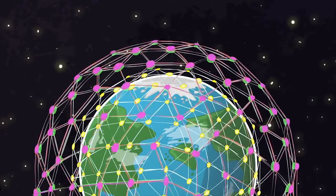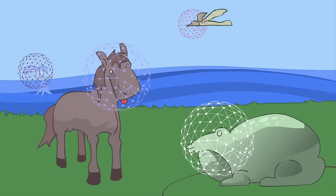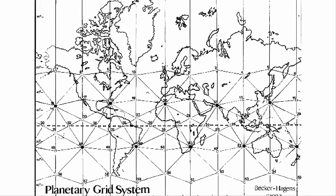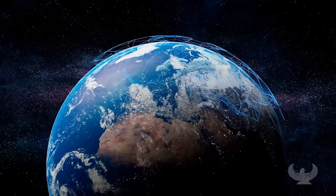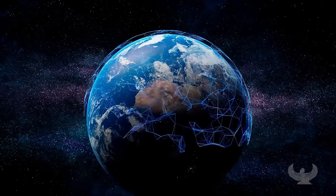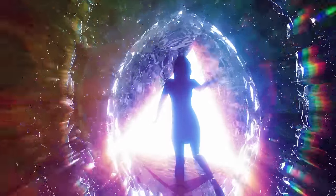You might recall from the Spirit Science Human History movie, the concept of a global consciousness grid, similar to a neural network, which suggests that humanity is connected to a larger field of energy and information. This grid can be accessed and influenced through energy work, meditation, and technology, enabling individuals to alter reality on a fundamental level.